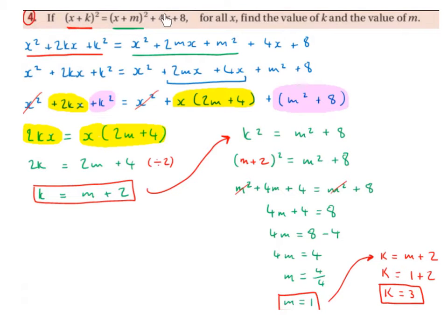We then bring down the 4x and the plus 8. Next, we're going to group together the like terms. On the left-hand side, we still have x squared plus 2kx plus k squared. On the right-hand side, the 2mx and the 4x are going to group together because they both have an x term. So on the right-hand side, we bring down the x squared, then plus 2mx plus 4x grouped together, then bring down the m squared and the 8.